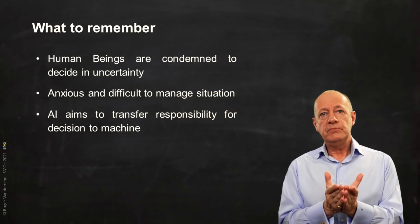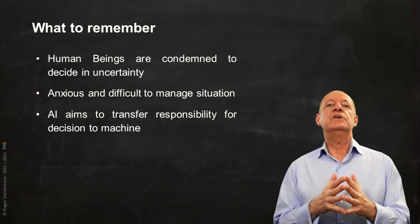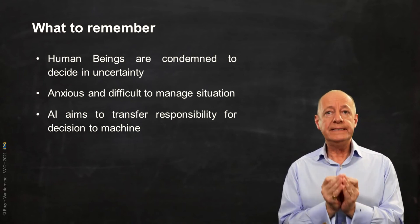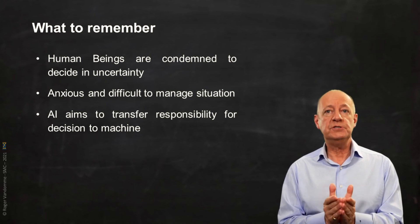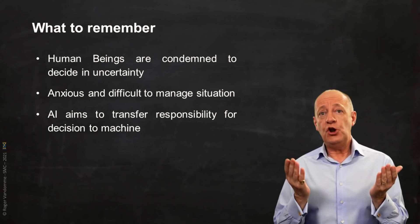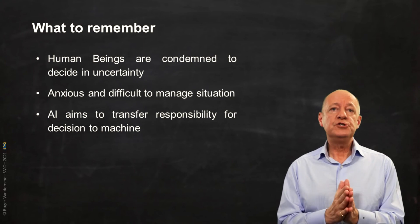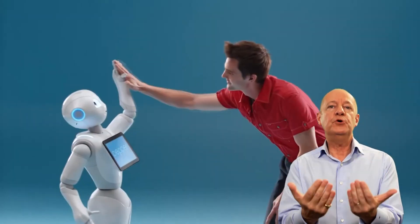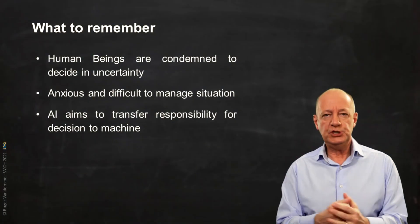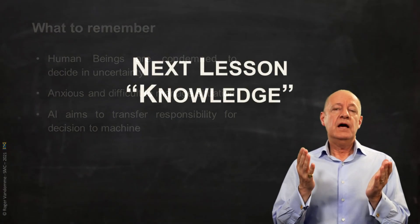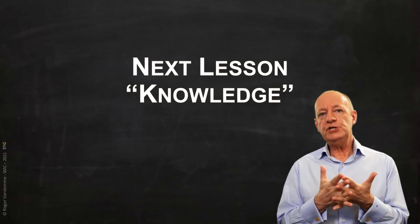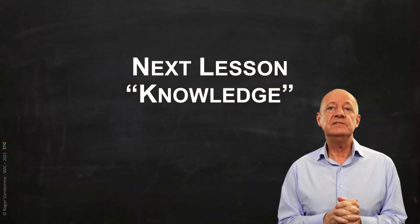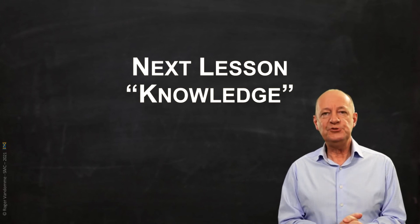What we should remember is that the whole concept of artificial intelligence is based on the fact that human beings are condemned to decide in uncertainty, that it generates lots of anxiety, and so human beings have developed the will to outsource the burden of decision-making to the machine. I will see you for the second lesson, during which we will explore further how to make an educated decision. See you soon.